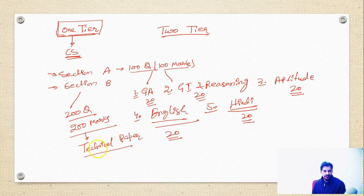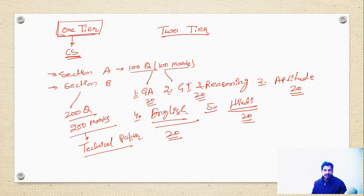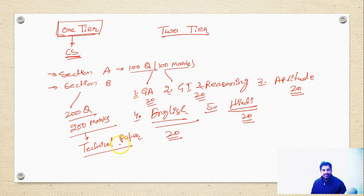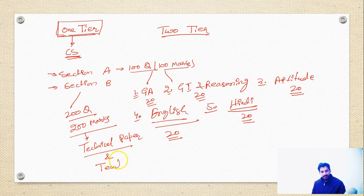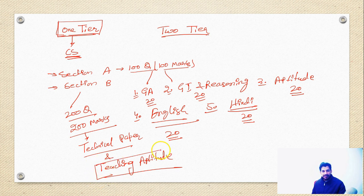In Section B, technical subjects such as C, Data Structures, Algorithms, Database Management Systems, Computer Architecture, Operating Systems, and related topics will be included. The questions are very simple compared to UGC NET or GATE — they ask about full forms, protocols, and similar basic concepts. Additionally, there will be 10 to 15 questions on teaching aptitude in Section B.